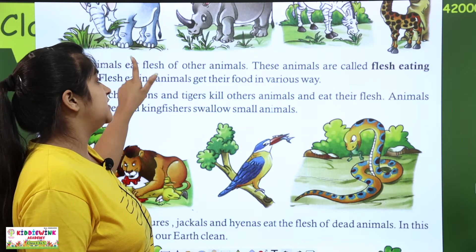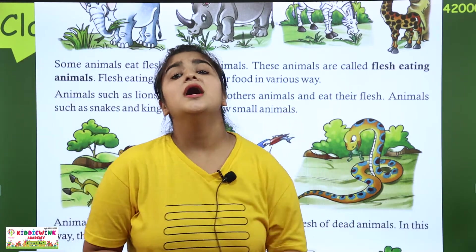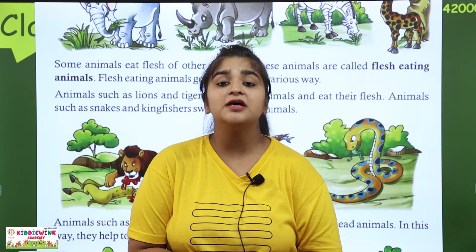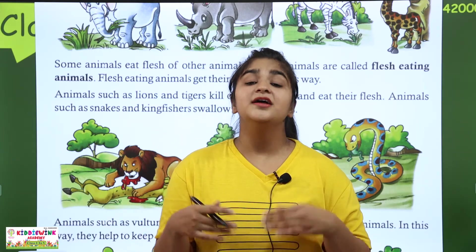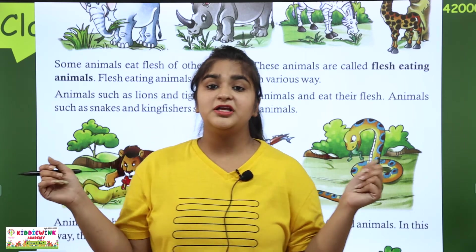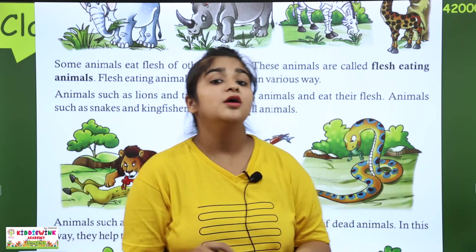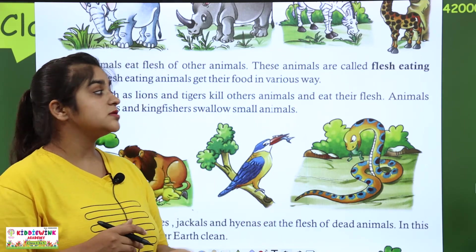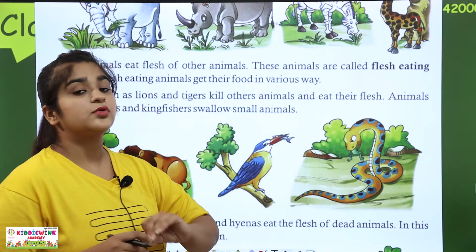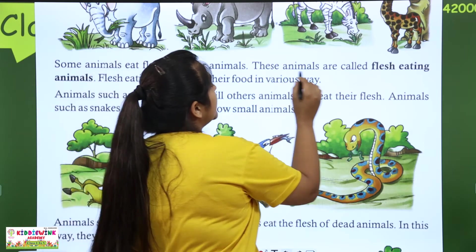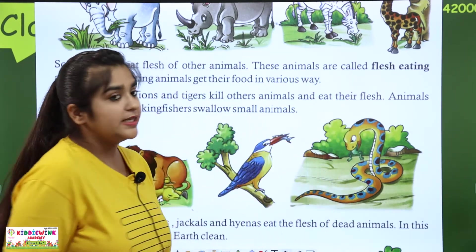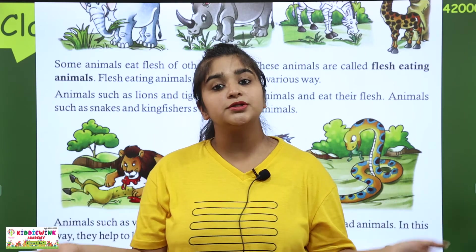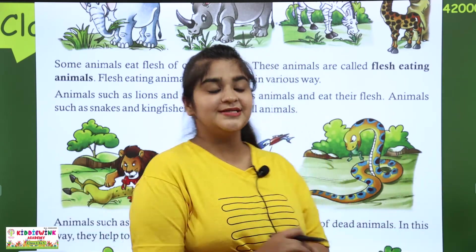Some animals eat the flesh of other animals. It means one animal kills another animal, and they eat the dead body — the flesh. These animals are called flesh-eating animals. The ones that eat plants are plant-eating animals, and the ones that eat flesh are flesh-eating animals.